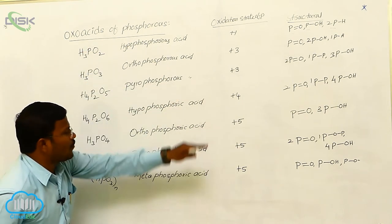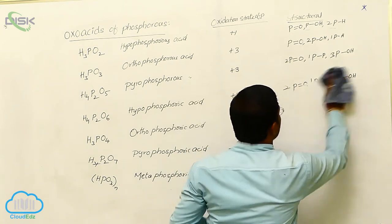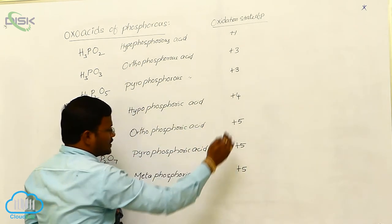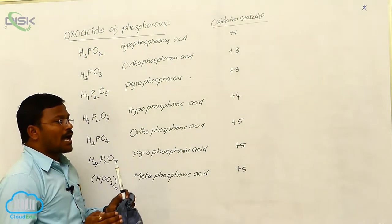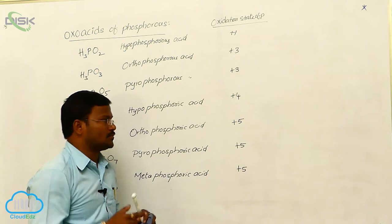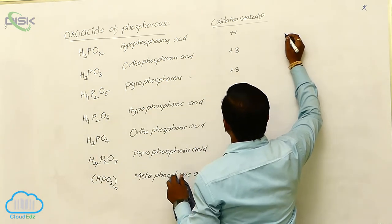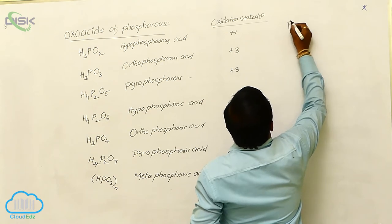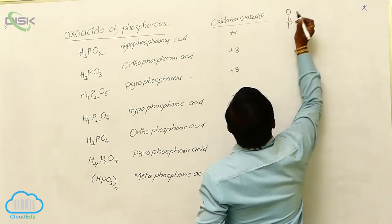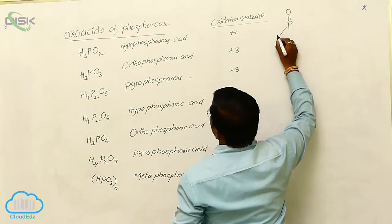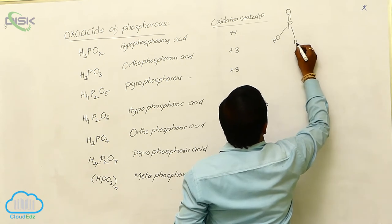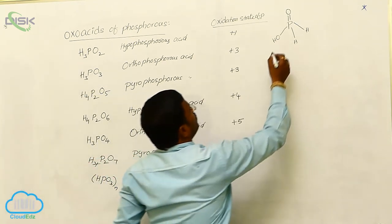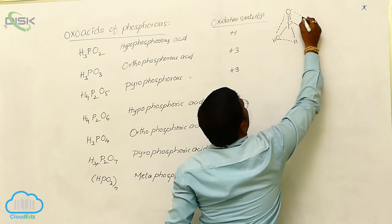Let us look at the structures or geometries of all these oxoacids. In all oxoacids, the phosphorus atoms are arranged in a tetrahedral manner. Starting with Hypophosphorous Acid: around the phosphorus, the linkages present are one P double bond O, one OH, and two H groups. The structure of Hypophosphorous Acid shows tetrahedral geometry.